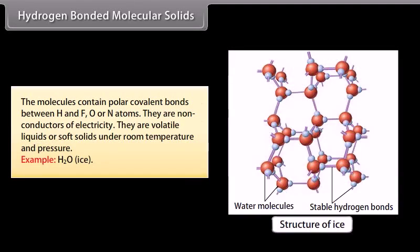Hydrogen bonded molecular solids: The molecules contain polar covalent bonds between H and F, O or N atoms. They are non-conductors of electricity. They are volatile liquids or soft solids under room temperature and pressure. Example: H2O.